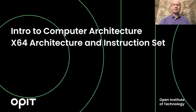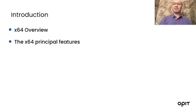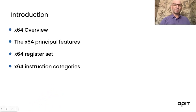Let's continue on from our discussion on the x86 architecture by taking a look at the newer x64 architecture and its associated instruction set. We'll start with a quick overview of the x64, look at its principal features, and discover that there's not really that much difference between the x86 and x64 architecture. Then we'll take a look at the expanded x64 register set and the different x64 instruction categories.